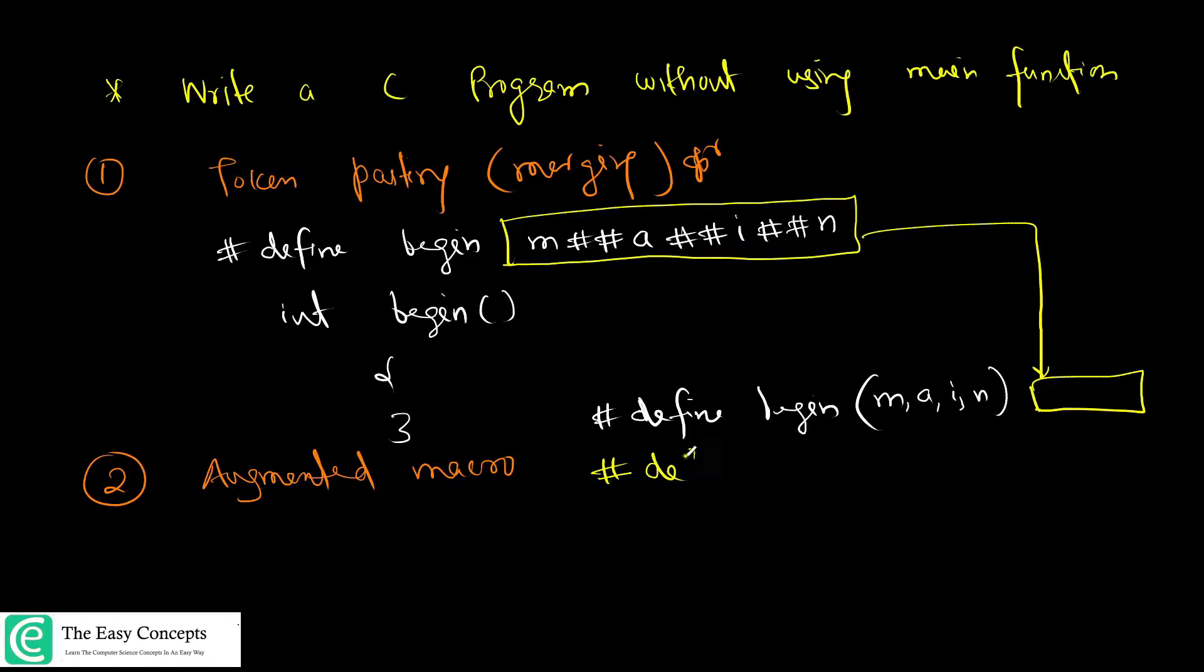At the end you can write a function with the name start. So what you are doing, you are calling start which will write begin in place of this, and then begin will again write main. This will concatenate everything and it will become int main.